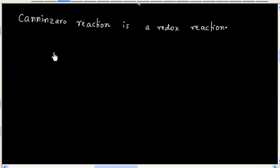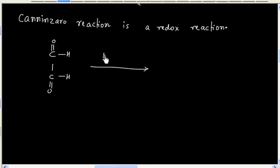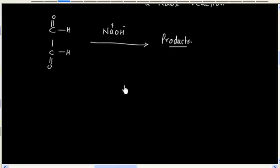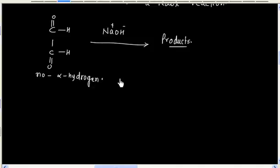Now let us consider this reaction. This compound is reacting with NaOH — what will be the products? Once again, this compound has no alpha hydrogen, so we will have the Cannizzaro reaction.